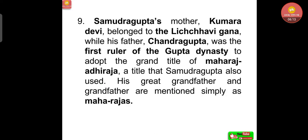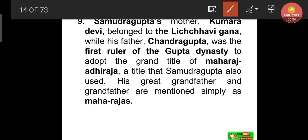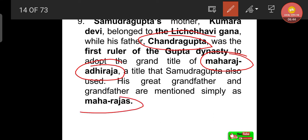Samudragupta's mother Kumaradevi belonged to the Lichchhavi gana, while his father Chandragupta was the first ruler of the Gupta dynasty. Who was the first ruler of the Gupta dynasty to adopt the grand title of Maharajadhiraja? That was Chandragupta I — a title that Samudragupta also used for himself. His great-grandfather and grandfather are mentioned simply as Maharaja.